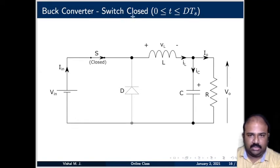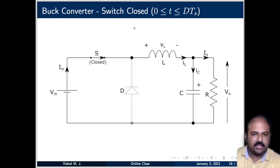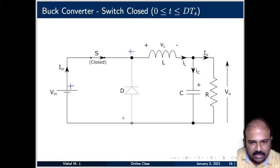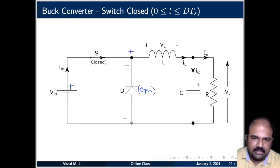The first portion is when the switch is closed, from 0 to dTs. The switch is closed — I have replaced the MOSFET or IGBT with a closed switch symbol. Now, the positive of the battery comes to one terminal and negative to the other. The diode is reverse biased as a result — the diode gets opened and is not present in the circuit, shown with a thinner grayed-out line. The current flows only through the switch path, meaning the load is directly connected to the source through the inductor.